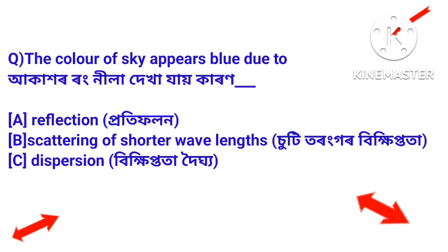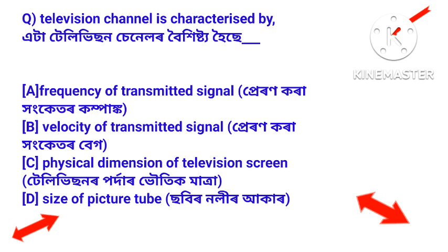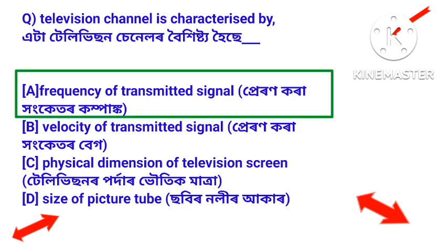Next question: the color of sky appears blue due to — akahor rong nila dekha jai karan. Next question: television channel is characterized by — yata television channel or boyhisto hoi se. Answer: frequency of transmitted signal — peron kora honketar komponang.